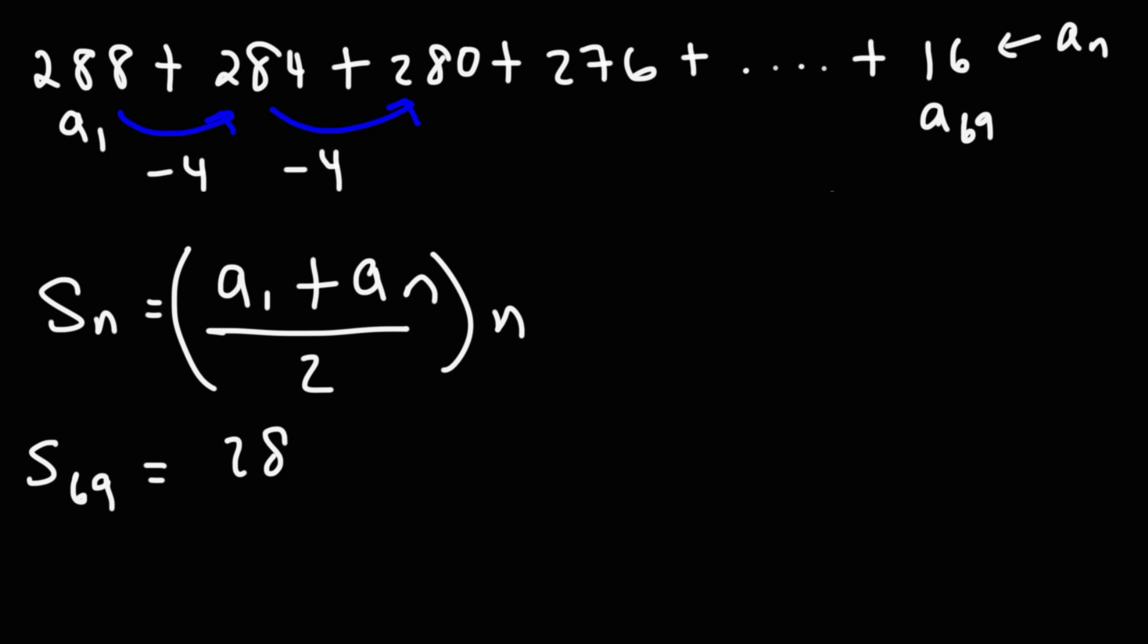So we want to find the sum of the first 69 terms. The first term is 288. The 69th term is 16. And n is 69. Now, 288 plus 16, that's 304.